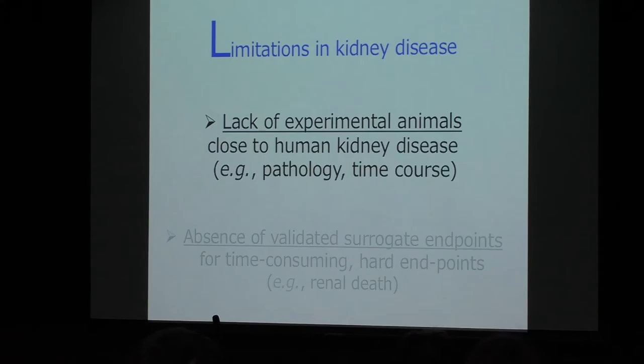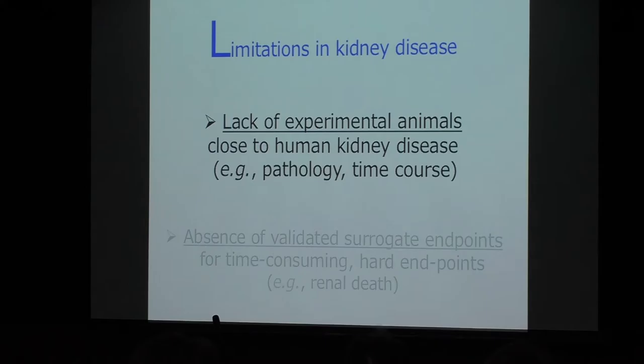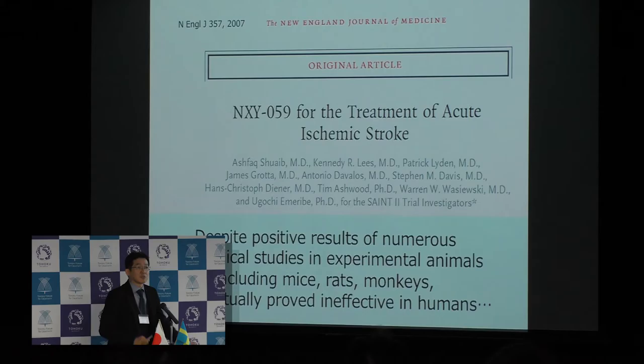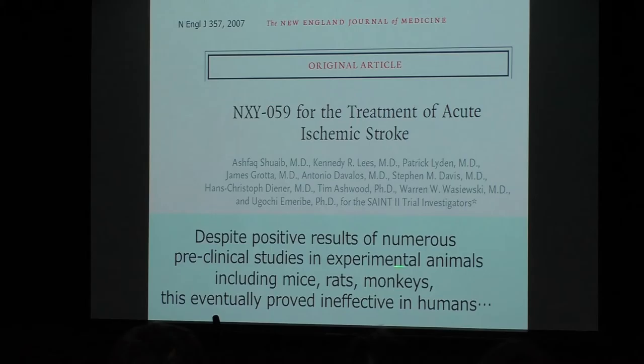Drug discovery in kidney disease suffers from several limitations. For example, lack of experimental animals close to human kidney disease. Translation of promising ideas to humans requires target validation in animal models. Unfortunately, animal models do not always mimic the human situation. The example of NXY059, a drug developed for acute stroke, is telling. Despite positive results of numerous preclinical studies in experimental animals,